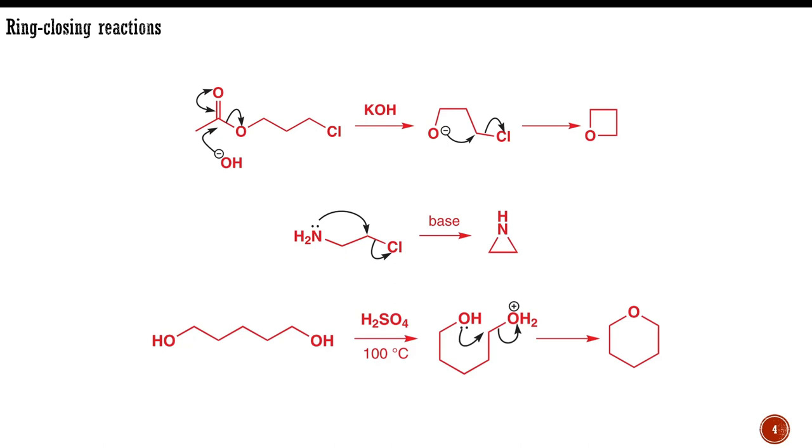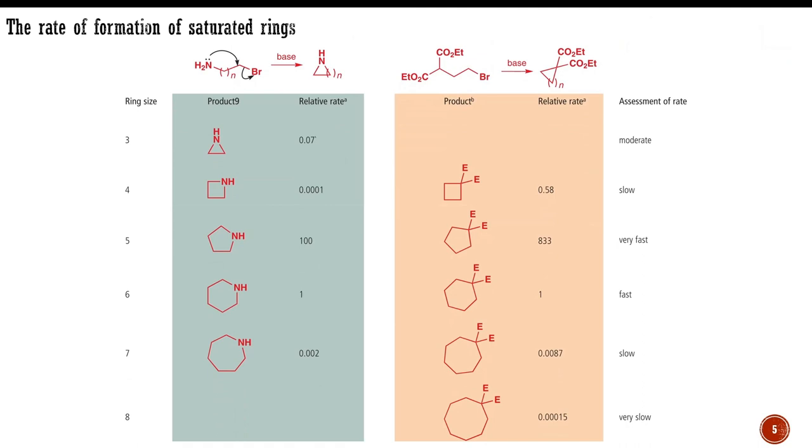In fact, 4-membered rings are generally among the hardest of all to form. To illustrate that, the green column of the table here shows the rates relative to 6-membered ring formation at which bromoamines of various chain lengths cyclized to saturated nitrogen heterocycles. To convince you that these numbers mean something, in the orange columns are shown the relative rates for another ring-closing reaction. This time forming 4- to 7-membered rings by intramolecular alkylation of a substituted malonate. Although the numbers are quite different in the two cases, the ups and downs are the same, and the final column summarizes the relative rates.